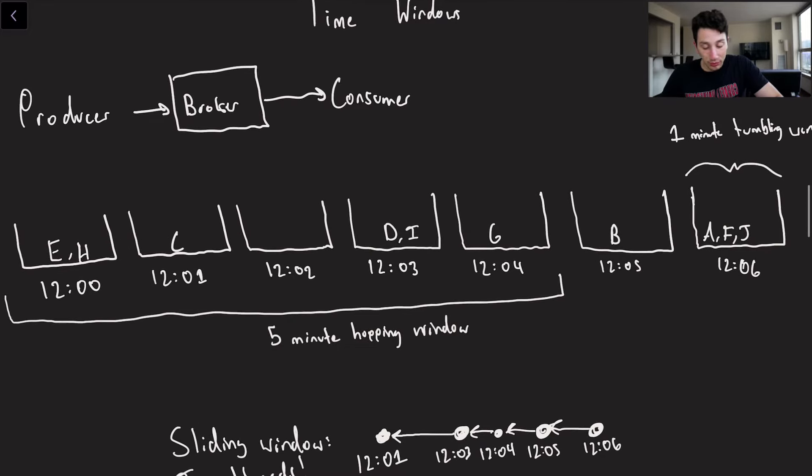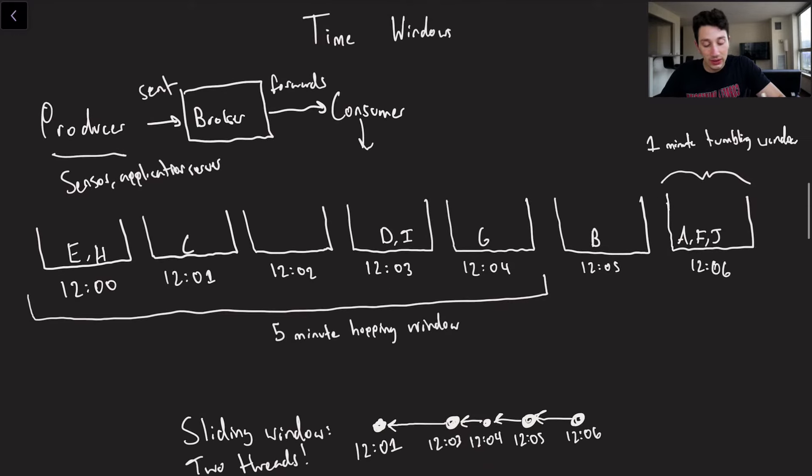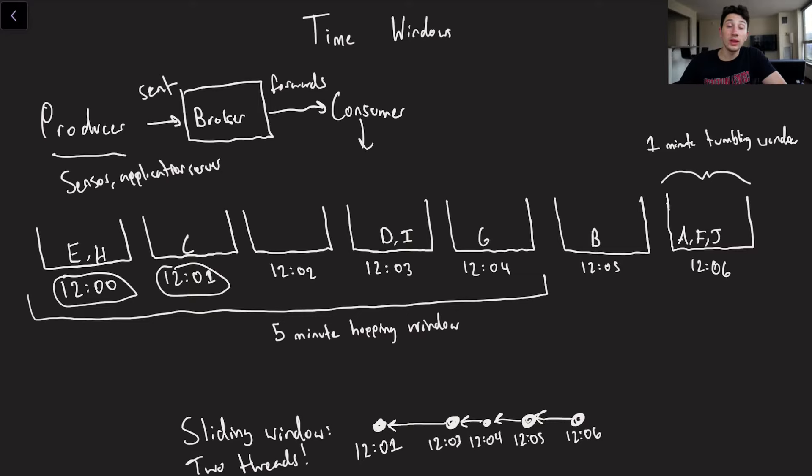So imagine that we've got ourself a producer over here. This could be something like a sensor or an application server that produces logs. And of course, those messages are now being sent right over here to the broker, which then forwards them to our consumer. Now imagine that what we've got below is effectively just a view of the state of our consumer, which again is doing all the processing of these messages. So let's imagine that we wanted to bucket them into something called tumbling windows. So a tumbling window, as you can see, are non-overlapping windows that start at a fixed interval with a fixed time size. So in this case, what we're looking at here are one minute tumbling windows starting at the beginning of every single minute. So how would we actually deal with this? Well, every single event is going to have a timestamp.